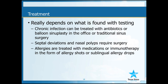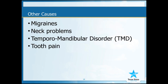Treatment really depends on what is found with testing. Chronic infection can be treated with antibiotics, balloon sinuplasty in the office, or sometimes traditional sinus surgery. Septal deviations and nasal polyps require surgery, and allergies are treated with medications or immunotherapy in the form of allergy shots or sublingual allergy drops.